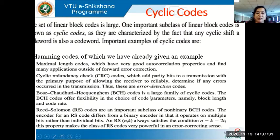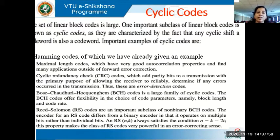The first application is Hamming codes, which we have already studied — cyclic codes can be used in Hamming codes. They can also be used in maximal length codes, which have very good autocorrelation properties. Maximal length codes are used for applications other than just forward error correction or error control coding. We also have CRC — cyclic redundancy check codes — which are commonly used for data transmission and reception in the data link layer.